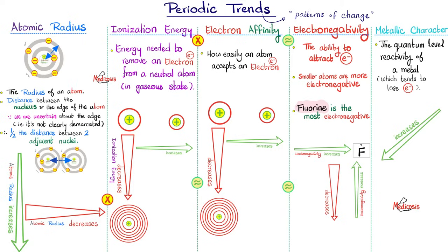How about across a period? Across a period, the electron keeps getting closer and closer to the nucleus, which means it gets harder to remove that electron from the atom — it takes more energy — so ionization energy goes up. Next, electron affinity has the opposite definition of ionization energy. Ionization energy was trying to remove an electron away from the atom, but electron affinity is how easily an atom attracts and accepts an electron. So the definition is the opposite; however, the trend is the same: down a group, electron affinity decreases; across a period, it increases — just like ionization energy.